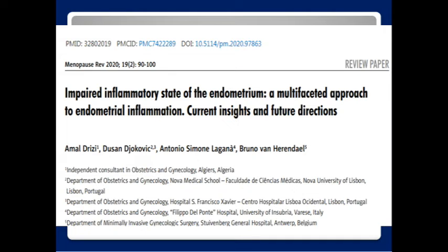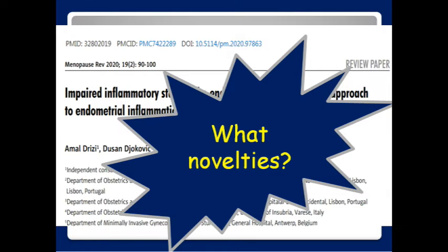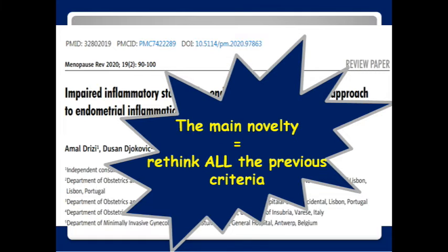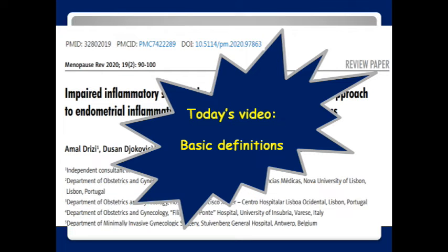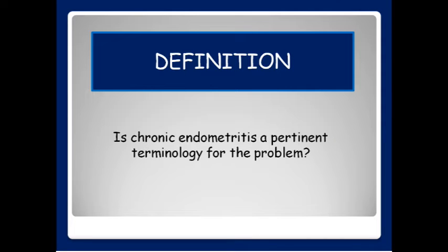Now, in our recently published paper, what has really changed? What novelties? Actually, the main novelty is to rethink all the previous criteria by providing evidence from the literature demonstrating the limits of the concept of chronic endometritis. Today's video is dedicated to basic definitions. So, by definition, is chronic endometritis a pertinent appellation of the problem?